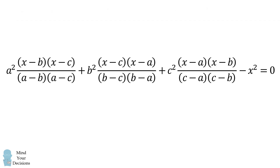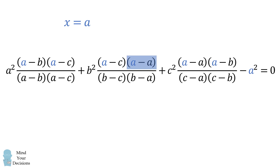So how can we solve this problem? Rather than trying to simplify algebraically, we'll substitute some convenient values. Let's try x equals a. We substitute into the equation and now let's simplify. Notice we have a term that's equal to a minus a, but a minus a equals zero, and zero multiplied by anything else will be equal to zero, so this entire term will vanish.